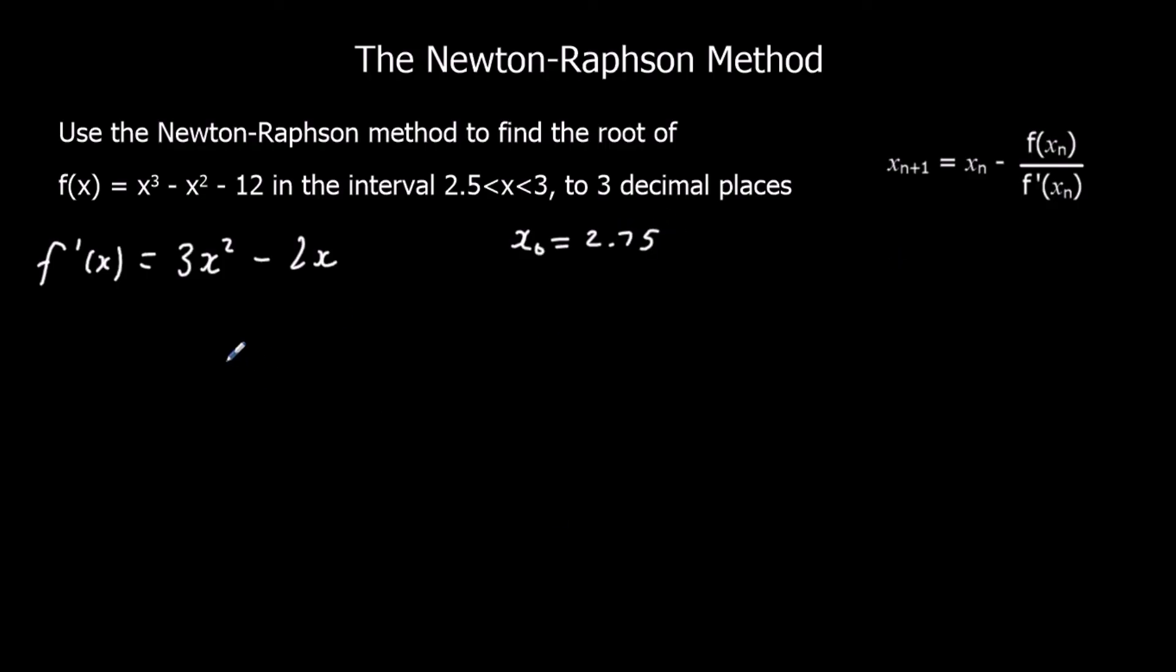x₁ is going to be 2.75, minus f(2.75), which is 2.75³, minus 2.75², minus 12, over f'(2.75). We just type it into the calculator. And we get our answer for x₁. We've got 2.6781, the 8-1 recurring.